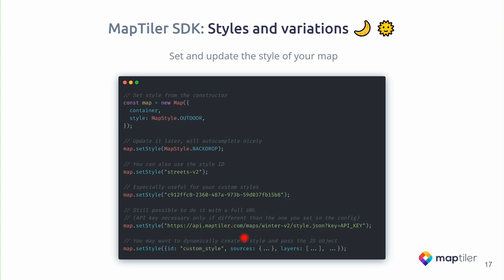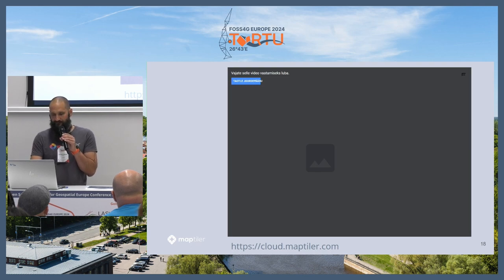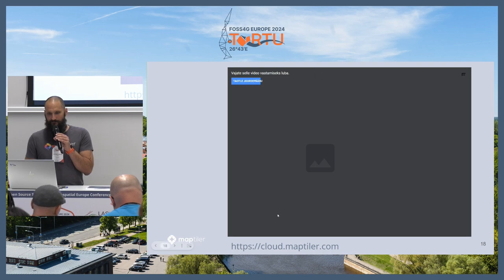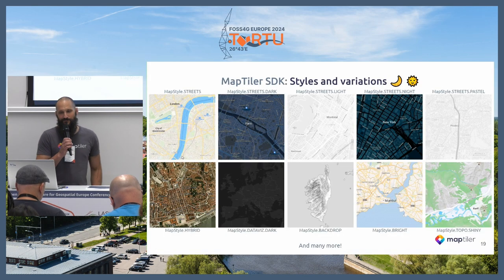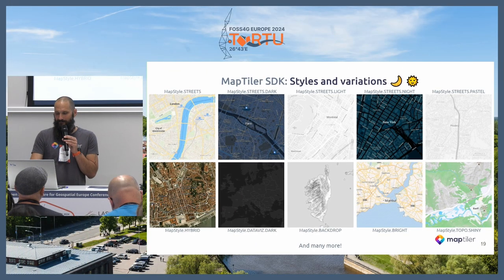You can also use any URL or directly apply the style object into the setStyle function. Some of the 30 styles have variants — for example, we have MapTiler Streets, and then Streets Dark, Streets Light, and Streets Night variants. There is a satellite map and also a so-called hybrid map, combining raster satellite imagery with vector labeling on top. We have a beautiful cadastral map and others as well.